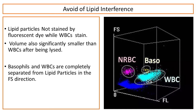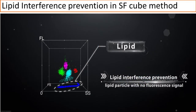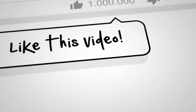To avoid lipid interference in this method: lipid particles are not stained by fluorescent dye, while WBCs are stained. The volume of lipid particles is significantly smaller than WBCs. After being lysed, basophils and WBCs are completely separated from lipid particles in the forward scatter direction, thus preventing interference and ensuring more accurate WBC results.